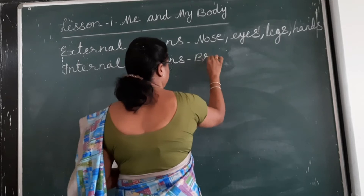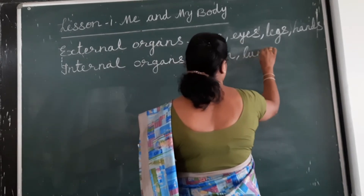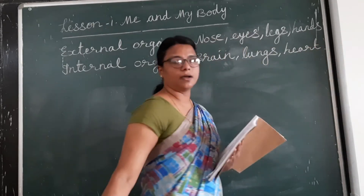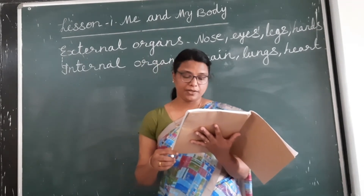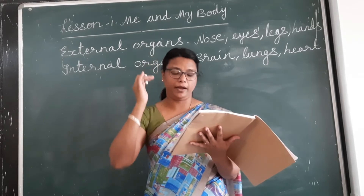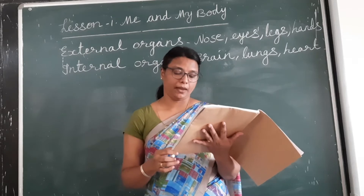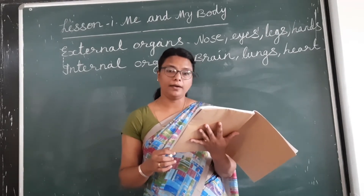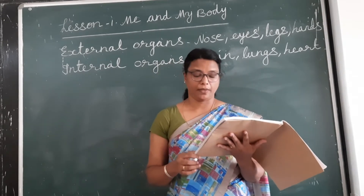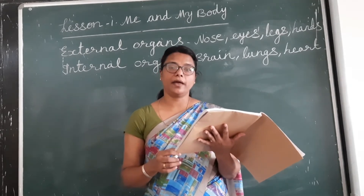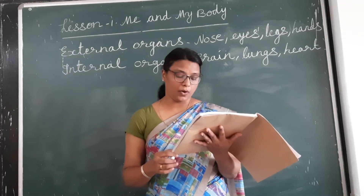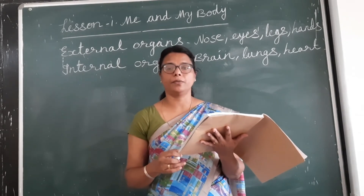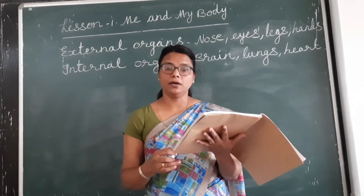For example: brain, lungs, heart, stomach, etc. Brain is inside our head. It controls all our body functions. It enables us to think, learn, understand and remember things. Heart is located in the middle of the chest, slightly to the left. It pumps blood to all parts of our body.